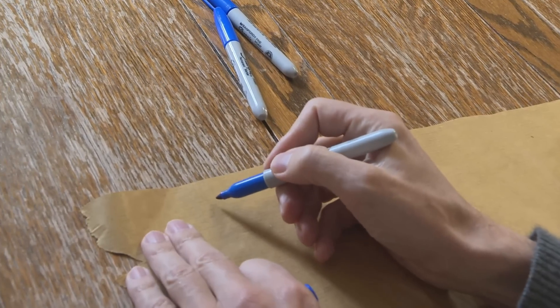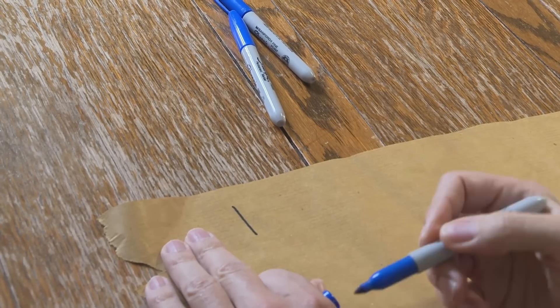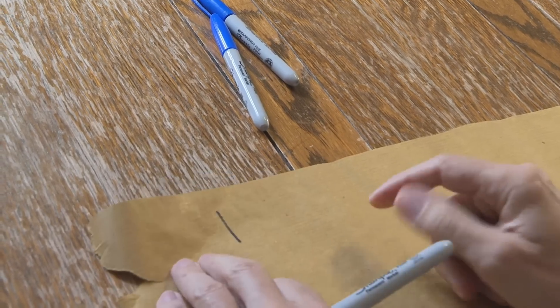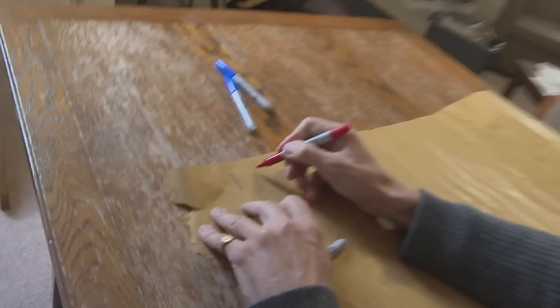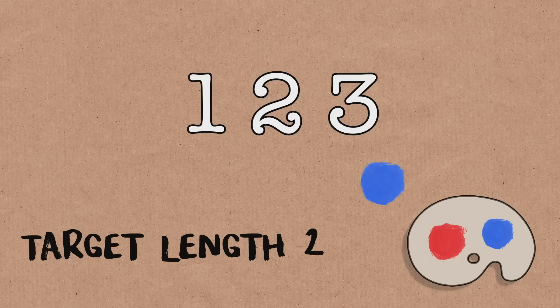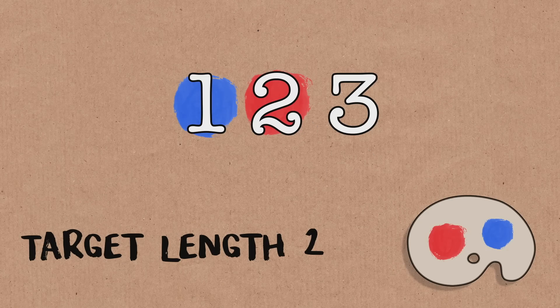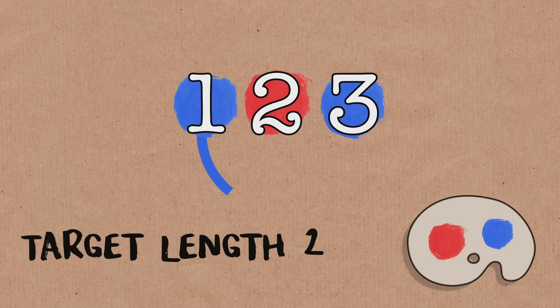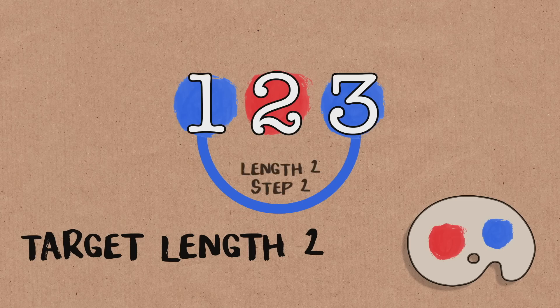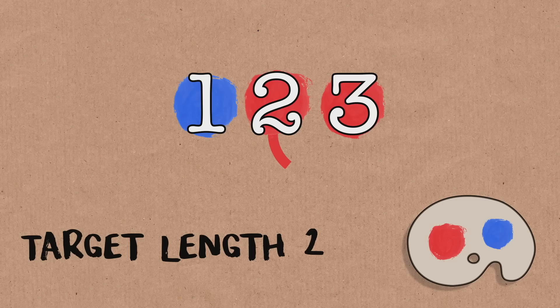So without loss of generality, one is colored blue. Now, if I want to avoid an arithmetic progression of length two in one color, I'd better color two red. And now what about three? If I color it blue, I have an arithmetic progression of length two and step two. But if I colored it red, I'd have had an arithmetic progression of length two and step one. So that's not a very hard problem.